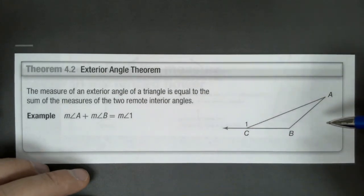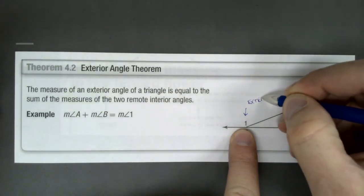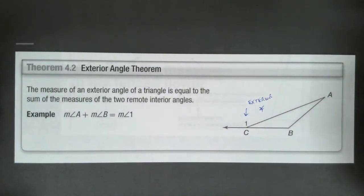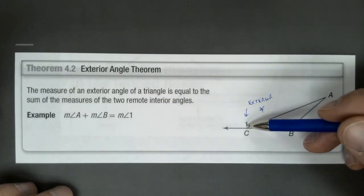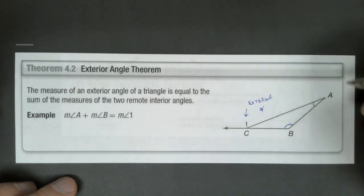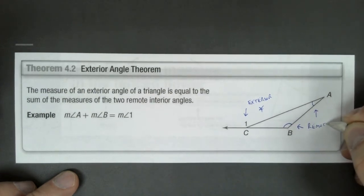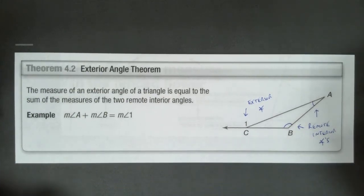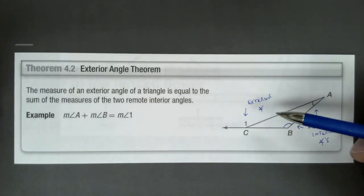Any exterior angle would be taking one of the lines of the triangle and just extending it outside the triangle. So you'll notice angle 1 we consider that to be the exterior angle. The remote angles, or remote interior angles, are going to be the two angles within the triangle that are kind of furthest away from that exterior angle. So in this case, B and A would be our remote interior angles.